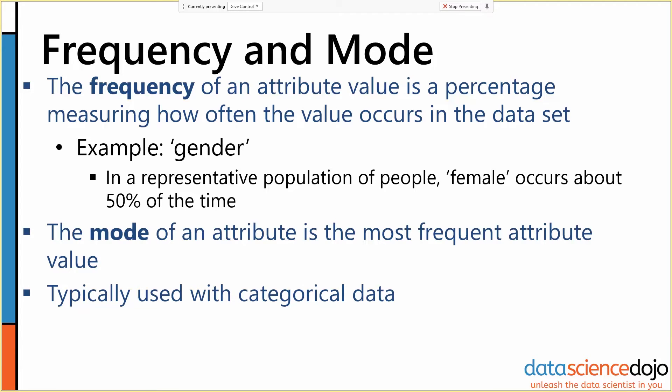On the other hand, the mode of an attribute is the most frequent attribute value. For example, we might have something like marital status: single, married, divorced. Depending on our data set, we may want to know what the most common value is — do we have mostly single people, mostly married people, or mostly divorced people in our data set? That will change the way we look at the data.